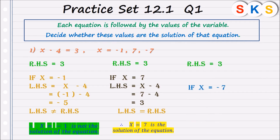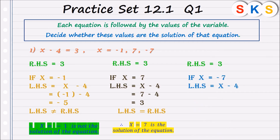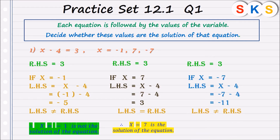Now we check the third value, x equals to minus 7. The right hand side is 3. We substitute x equals to minus 7 into the left hand side, x minus 4. Replacing x by minus 7, we get minus 7 minus 4, which is minus 11. Since the right hand side is 3 and left hand side is minus 11, LHS is not equal to RHS. Hence, x equals to minus 7 is not the solution of the equation.